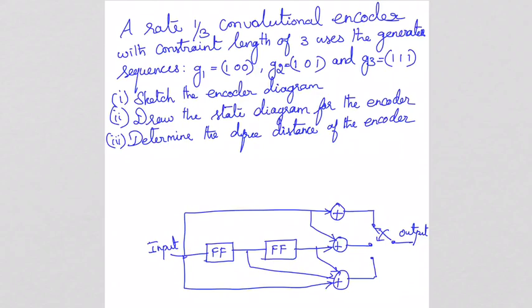Next, the third output. The third output connection is given by G3. G3 is 1, 1, 1, and there are three connections. All three input lines connect to the third adder. This completes the encoder diagram.